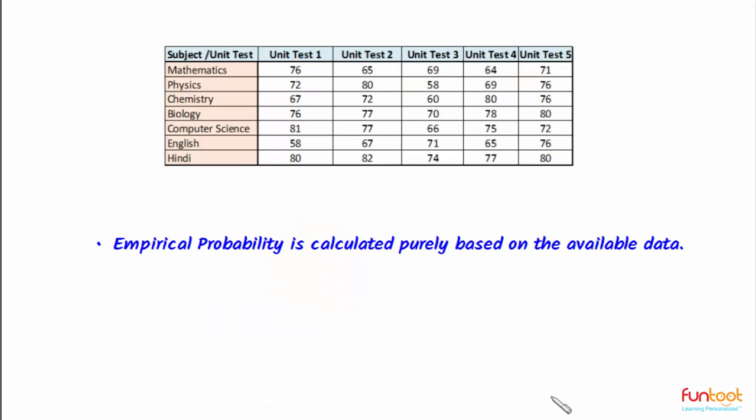In this video we learnt how to calculate probability for an event based on the data given. Empirical probability does not take into account all situations — it is only based on the data given. Values of empirical probability may come out different from different sets of data.